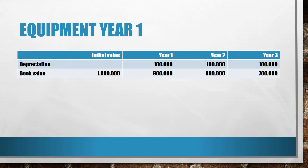In year one the company depreciates 100,000 euro, so at the end of year one the book value would be 900,000 euro. The same happens in year two: again a 100,000 euro depreciation, so at the end of year two the book value would have decreased by another 100,000, leaving us with a book value of 800,000 euro. In year three, again a depreciation of 100,000, and so on until year ten.